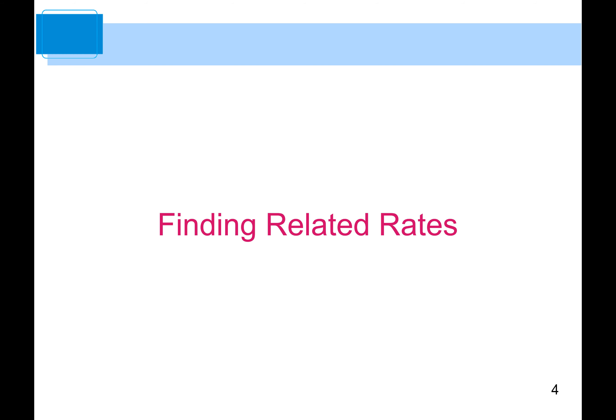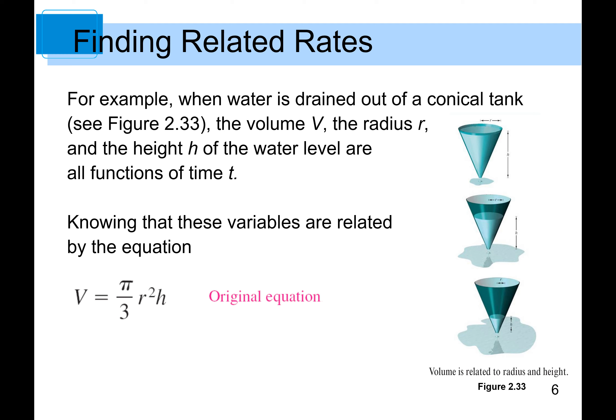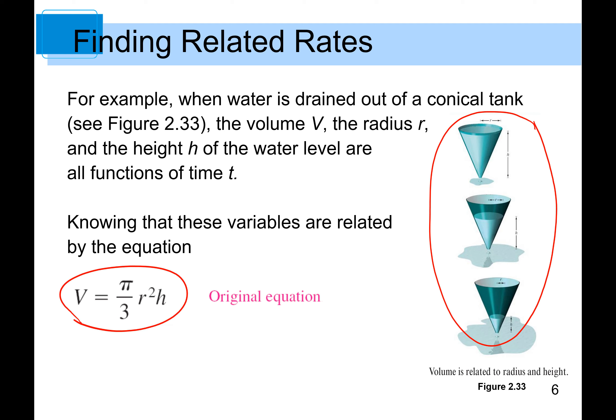First, let's take a look at how to find a related rate using the chain rule — the same rule we use to find derivatives implicitly. Another important use of the chain rule is to find the rates of change of two or more related variables changing with respect to time t. For example, when water is drained out of a conical tank, the volume V, the radius R, and the height H of the water level are all functions of time t.